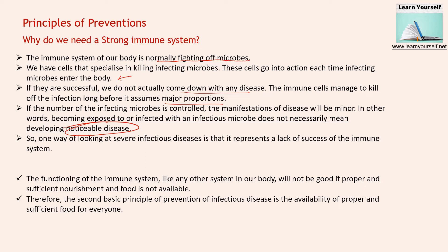With small microbial count and a stronger immune system, the majority of diseases will go unnoticed. One way of looking at severe infectious disease is that it represents a lack of success of the immune system. If you frequently catch colds or have microbial infections, you need to work on strengthening your immune system. The functioning of the immune system, like any other system in our body, will not be good if proper and sufficient nourishment and food is not available. To make our immune system strong, the first point is sufficient and balanced nutrition.